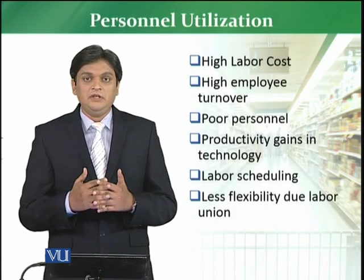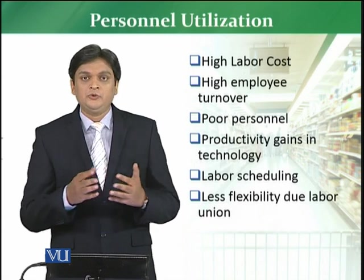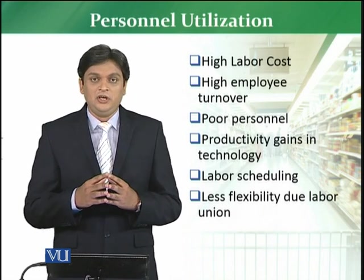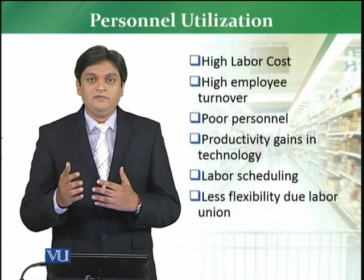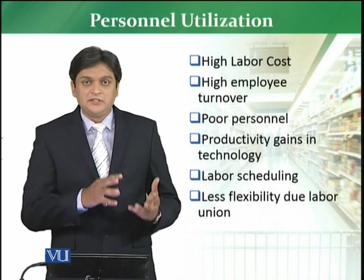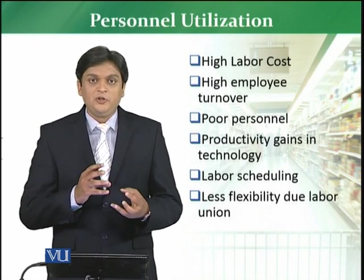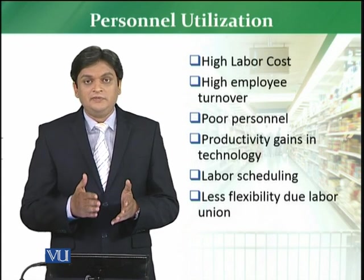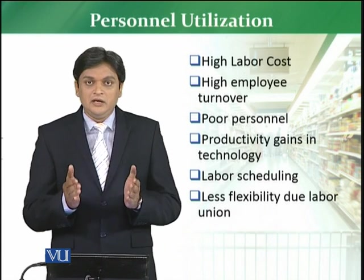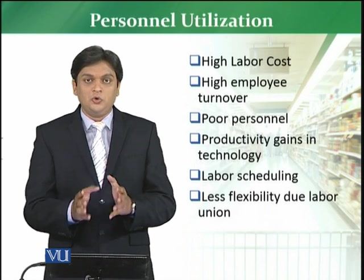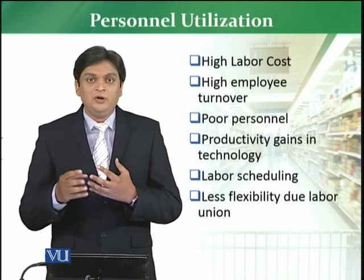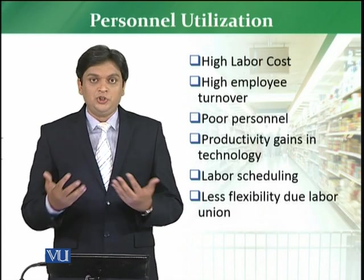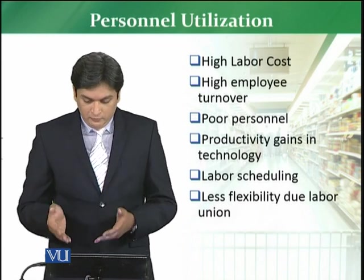If we are not getting that productivity from the personnel, both the technology investment and the labor resource become question marks. Labor scheduling is also an important key factor in personnel utilization. For example, you have to make morning, afternoon, and evening shifts, and accommodate female staff appropriately. You have to ensure that more staff are available during rush hours. In Pakistan, the peak hour of retail business is typically 7pm to 10pm. During those 3 hours, your maximum staff should be available in the store — handling customers, dealing with them, giving information, facilitating them — so customers feel attended and the store's productivity improves.